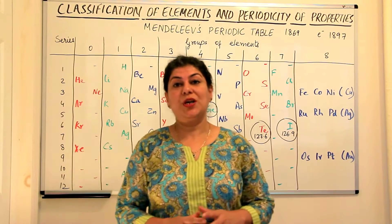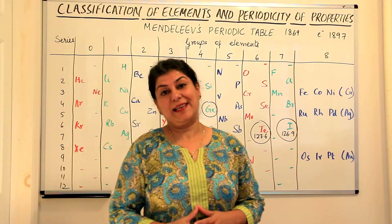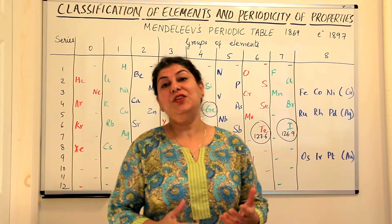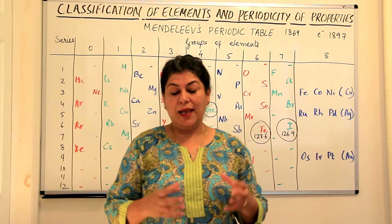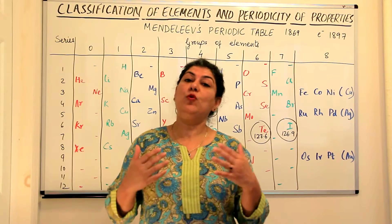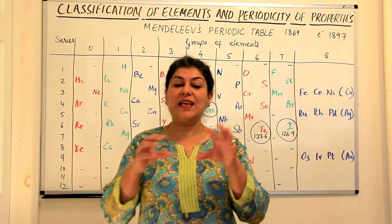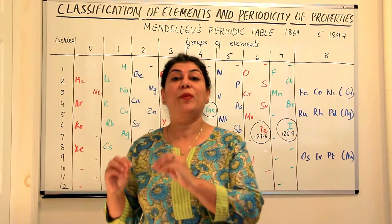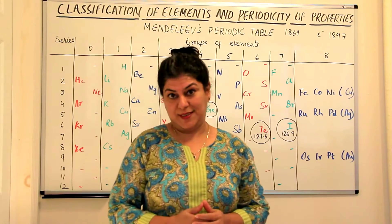In the previous videos, we discussed about the earlier attempts at classification by Dobereiner who gave his triads and the Newlands Law of Octaves. After this, Lothar Meyer and Mendeleev almost simultaneously proposed that if they arranged the elements according to their increasing atomic masses, they found a periodicity in their properties.